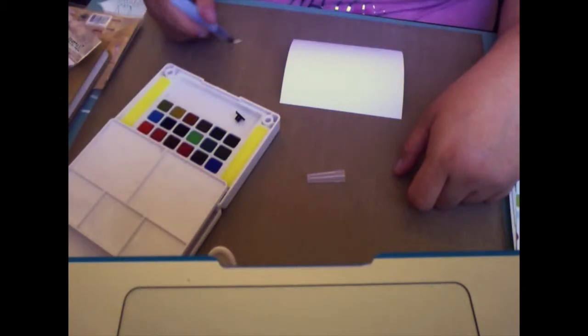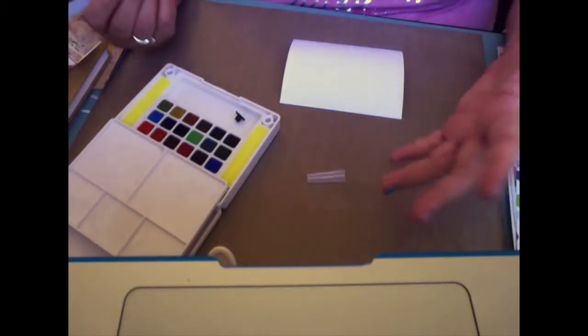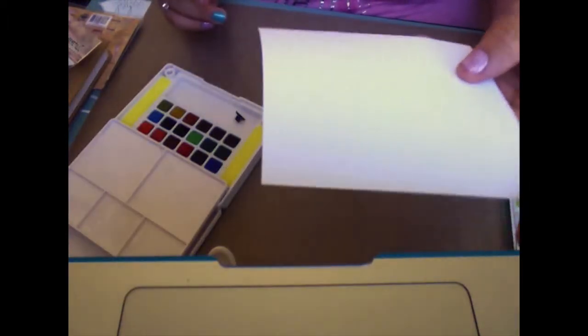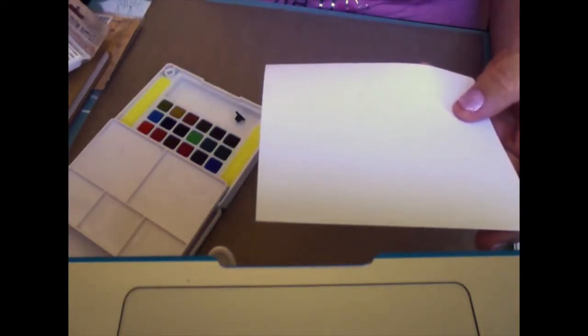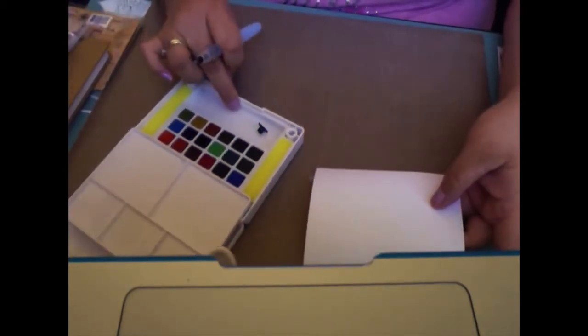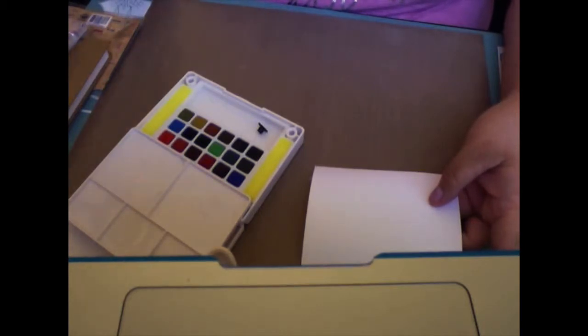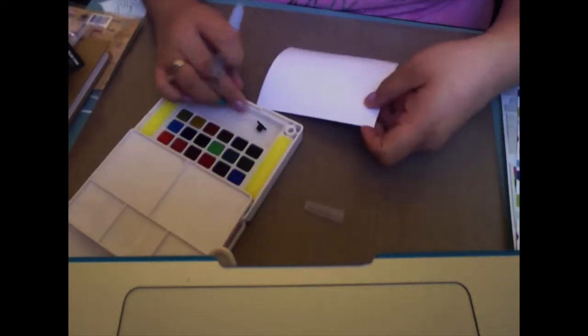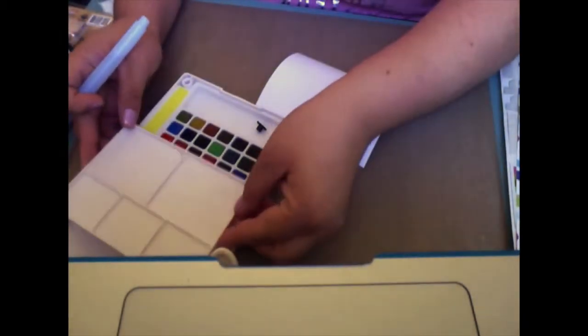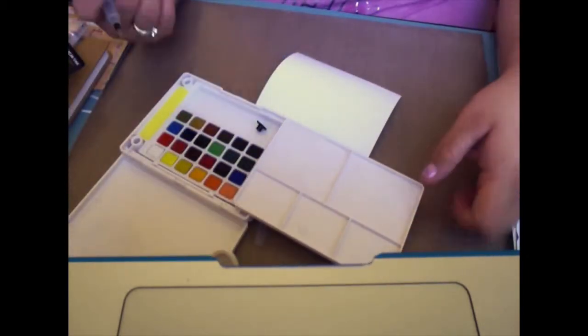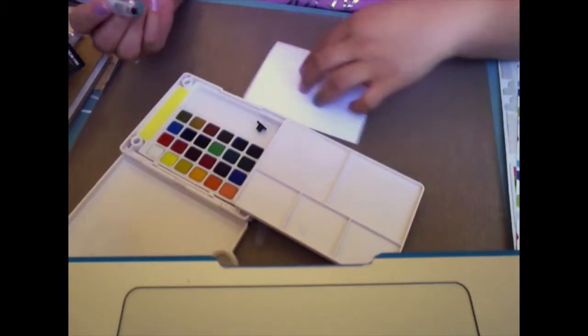This is going to be process video number one and I'm experimenting with the Tim Holtz distress watercolor cardstock. I'm using my set of Koi watercolors in 24 colors, and I'm going to be using this and seeing what I can do or just looking at the process and we'll get started from there.